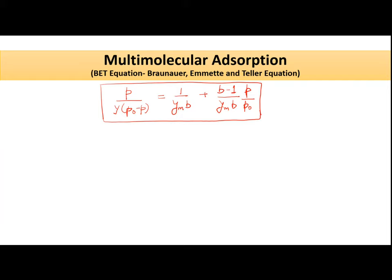The previous two isotherms — Freundlich and Langmuir — basically signify monolayer formation; we assume only a single layer of molecules is present on the solid surface. But in some cases we encounter multilayer adsorption. In those cases, those equations do not hold true, and we have one more equation called the BET equation, given by three scientists whose initials give its name.